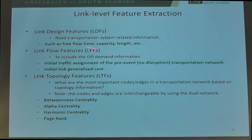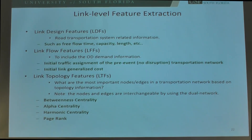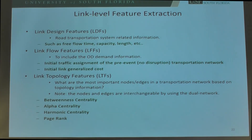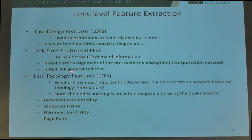The first component is link-level feature extraction. We categorize all link-level features into three classes. The first class is link design features — features directly from the transportation network such as free flow time, capacity, or length of each link. The second class is flow features, which capture the OD information of a given transportation network. To capture OD information, we apply traffic assignment on the initial transportation network without any disruptive links, and use the initial traffic assignment as the flow features along with link generalized cost.